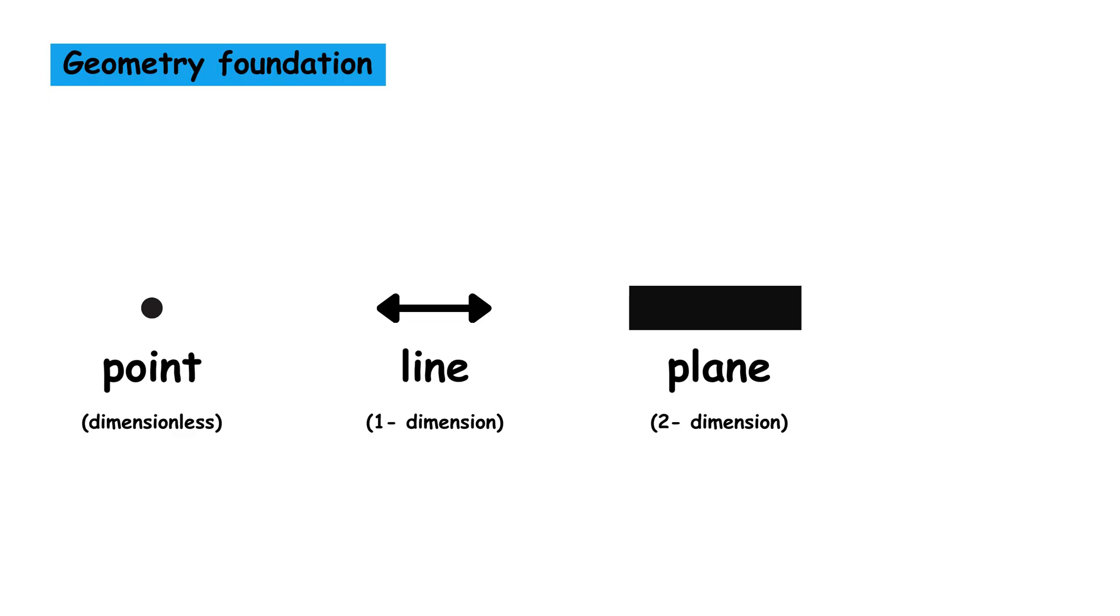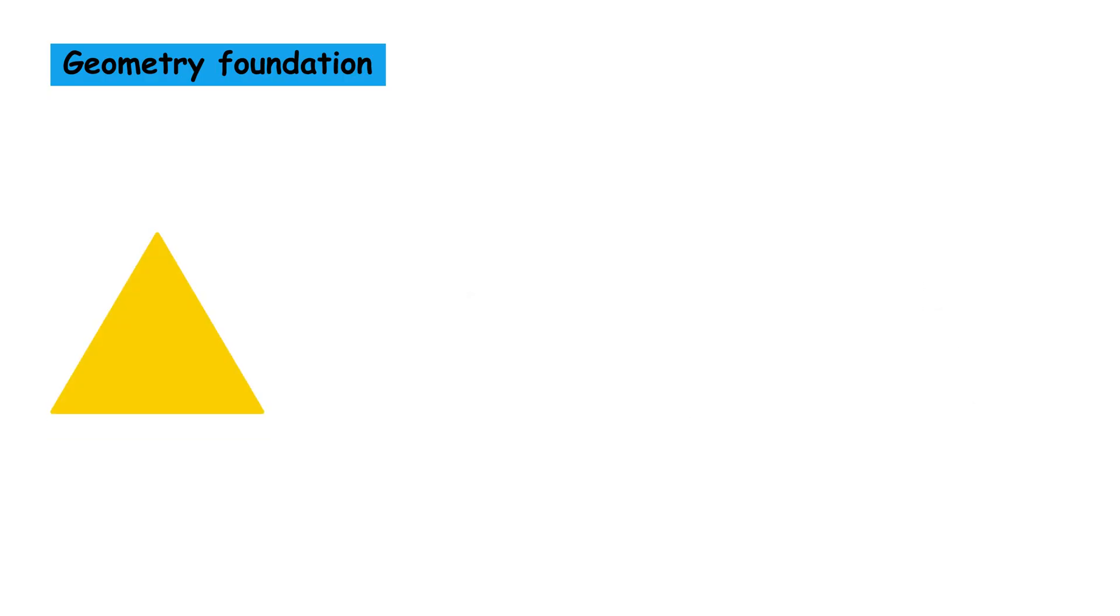Its foundations begin with primitive elements such as the point (dimensionless), the line (one dimension), the plane (two dimensions), and the solid (three dimensions), from which figures like triangles, polygons, circles, and geometric solids are constructed.